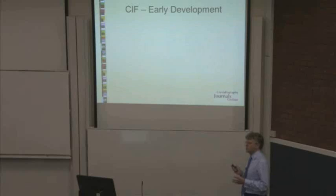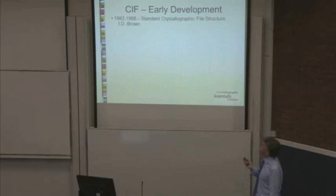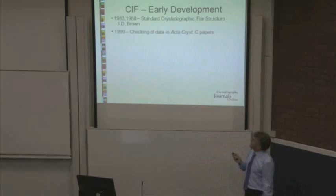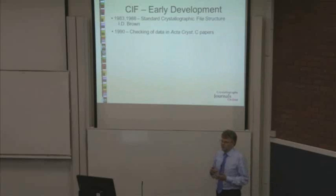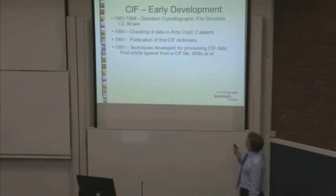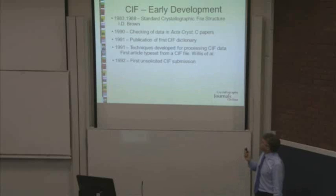A quick overview of the early development of CIF. Before CIF, David Brown worked on the standard crystallographic file structure, and a lot of the work done there was fed into the CIF. As early as 1990, before we even had CIF, we actually checked the data coming to our journals using various suites of programs such as X-Style and NRC-VAX — we keyboarded all the data and did that by hand. In 1991, the first CIF dictionary was published, and in-house, Brian McMahon developed techniques for processing CIF data to a typeset article.